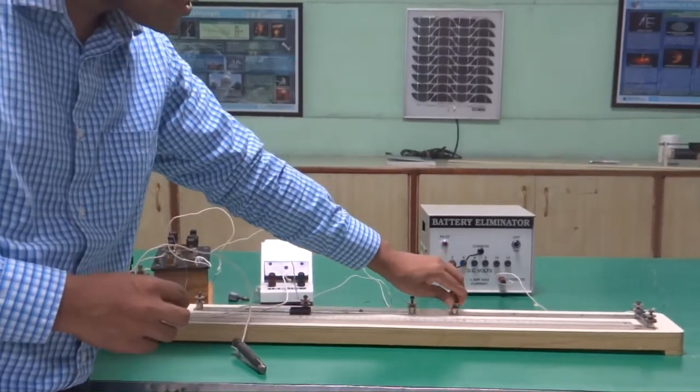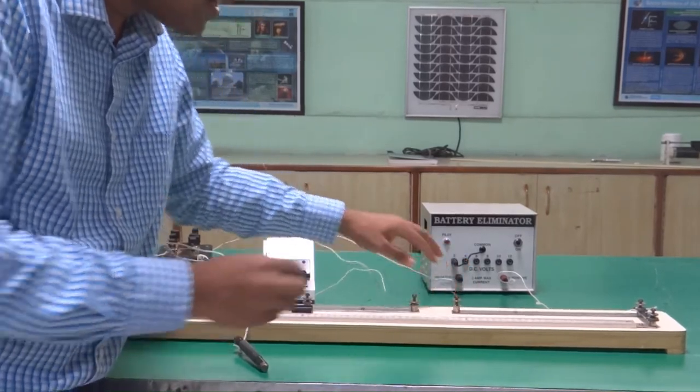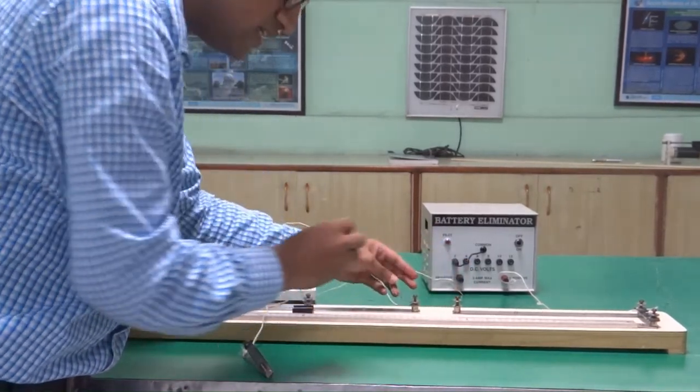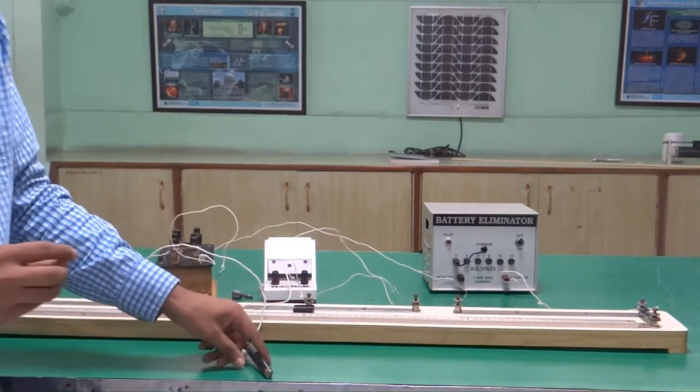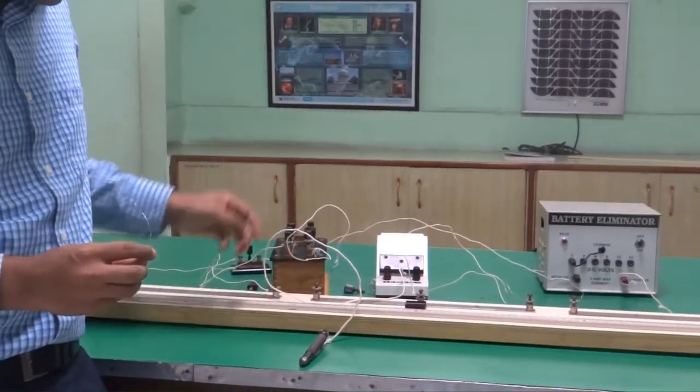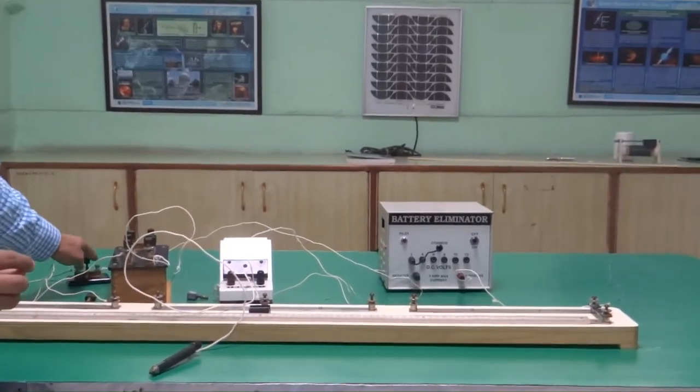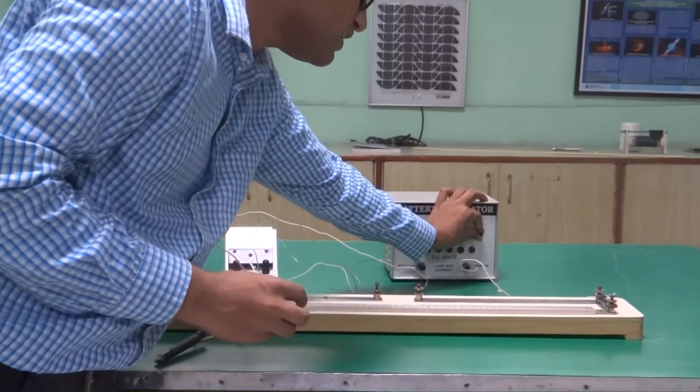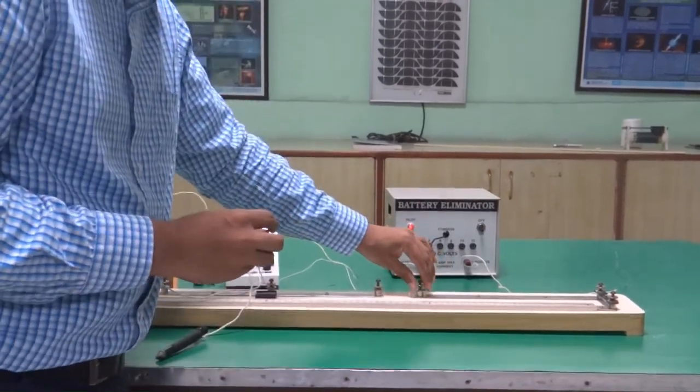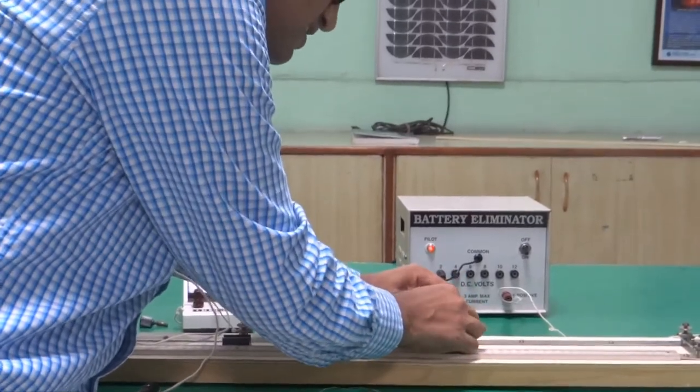Now remove this resistance from this slot and instead of this, place the second resistance over there. Now take two sets of reading with suitable value of a known resistance and then calculate the value of the resistance when it is connected in series.